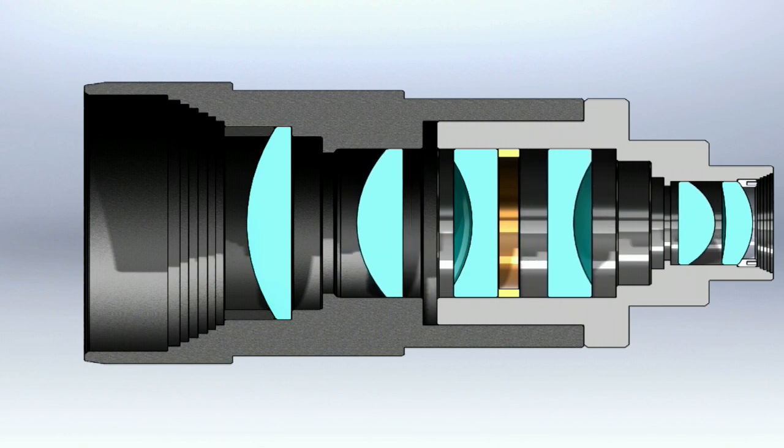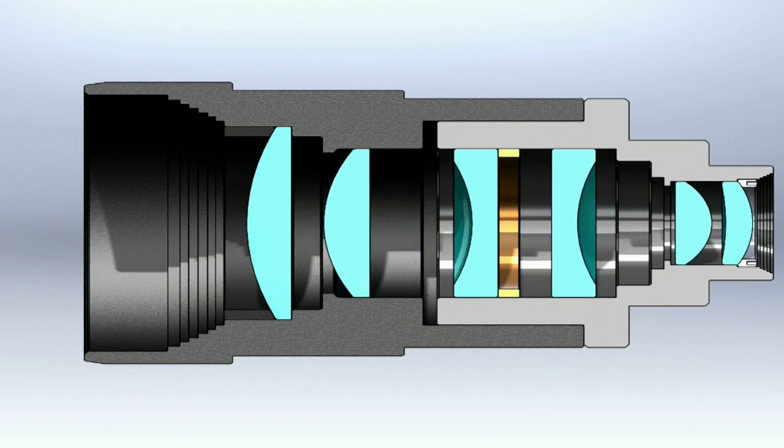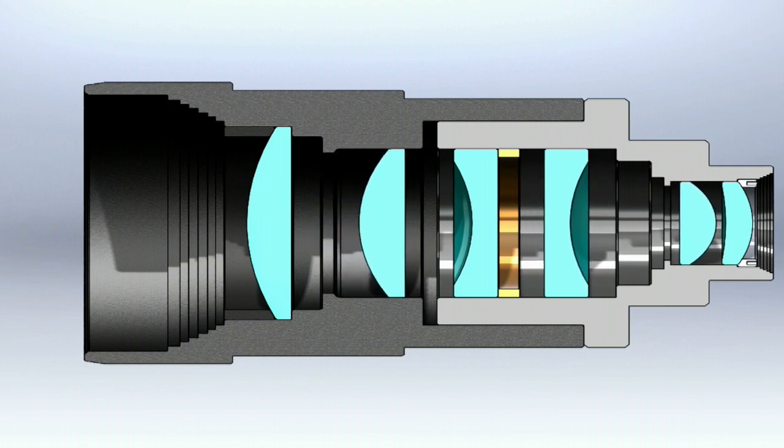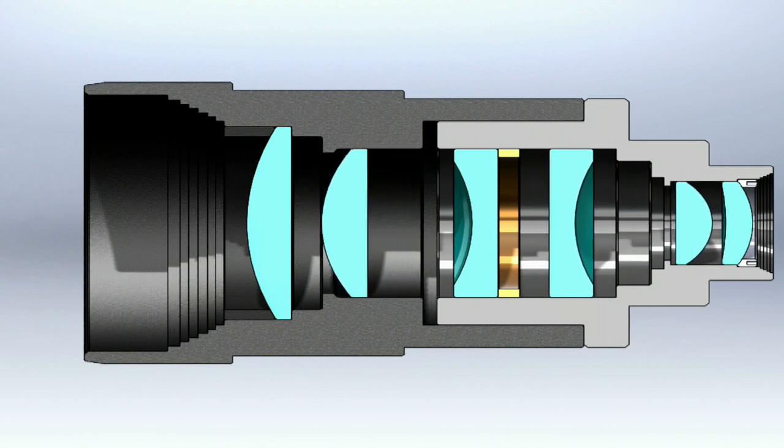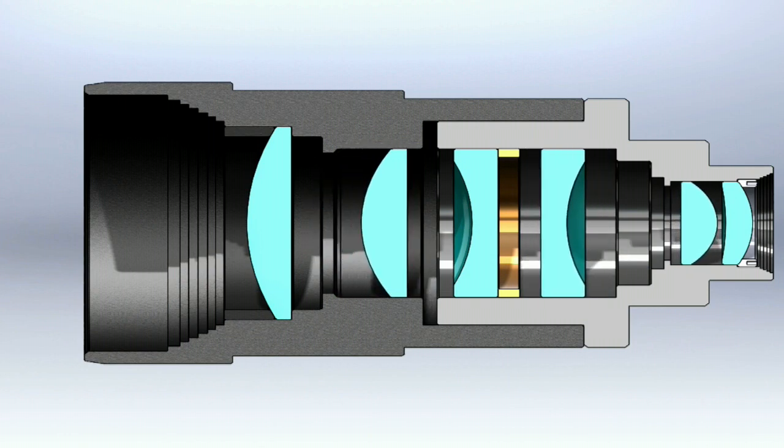Conventional zoom requires quite a bit of space because you have to physically move lenses with respect to each other, and of course that requires additional power, whereas this technology can be exceedingly compact and very low power.